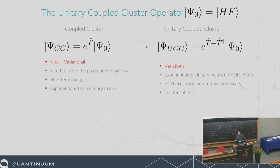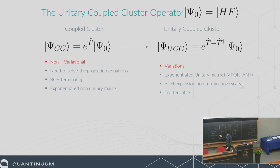Coupled cluster motivated the first quantum chemistry ANSATZs for quantum computing — this is the unitary coupled cluster. You take this T, which is non-unitary, and then you exponentiate T minus its complex conjugate. This is now a unitary coupled cluster object. The problem is, when you try to solve this with classical quantum chemistry methods, this is non-terminating. But you do a nice trick in quantum chemistry.